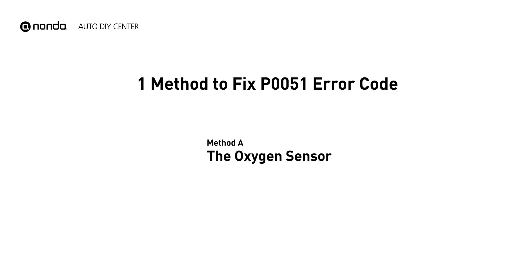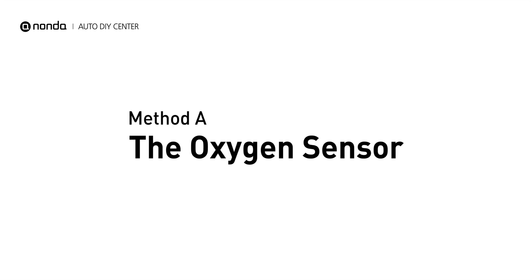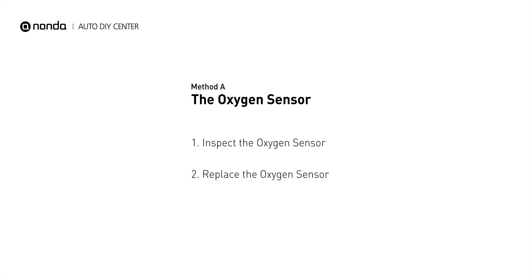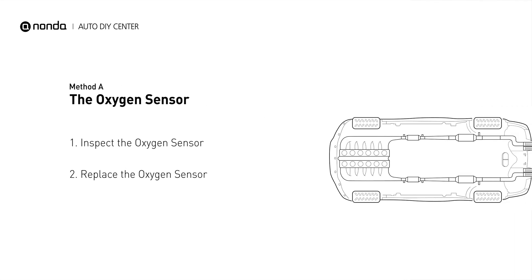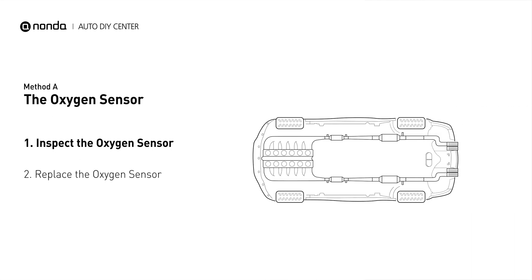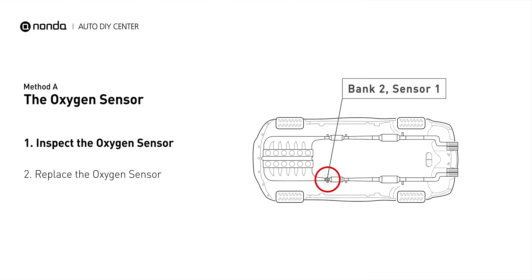Here is a simple DIY method you can try to solve this problem. Method A: the oxygen sensor. This oxygen sensor is located right before the catalytic converter. Bank 2 is on the side with cylinder number 2, and sensor number 1 is usually the one in the exhaust manifold.